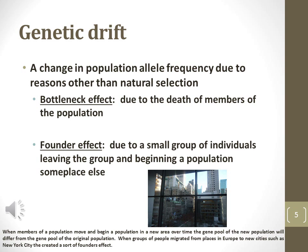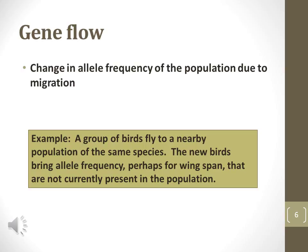Genetic drift describes shifts in allelic frequency over time due to reasons other than natural selection. A bottleneck effect may occur where only a small portion of individuals of the species survive. Bottleneck events are characterized by a decrease in diversity and heterozygote frequency above that predicted by the Hardy-Weinberg equation. A founder effect occurs when a small group of individuals begin a new population; the frequencies of the new population will reflect the frequencies of the founders, not the frequencies predicted from the original population. Gene flow occurs when allelic frequency changes due to a migration event between populations, such as birds flying from one flock to another.